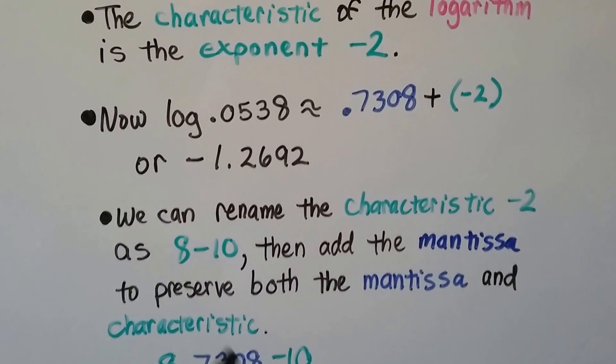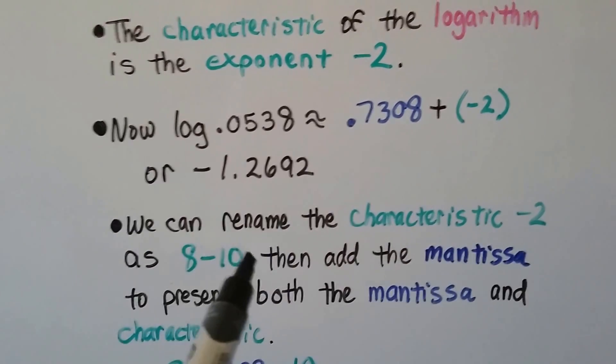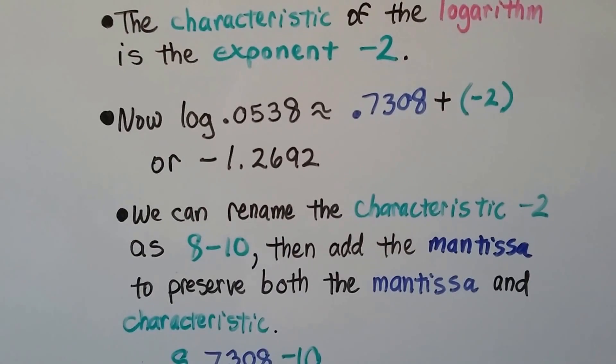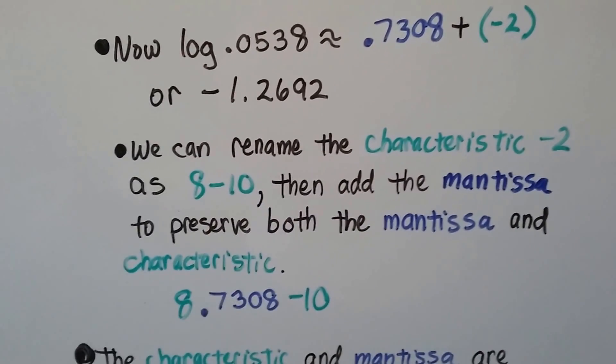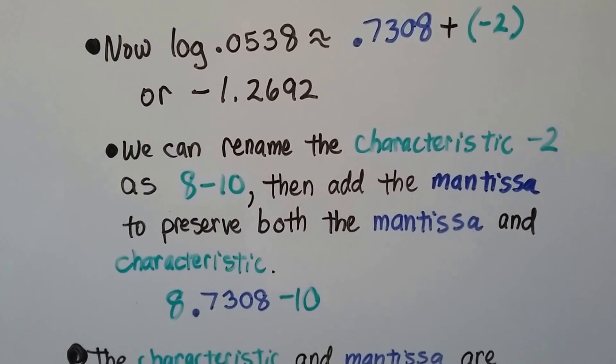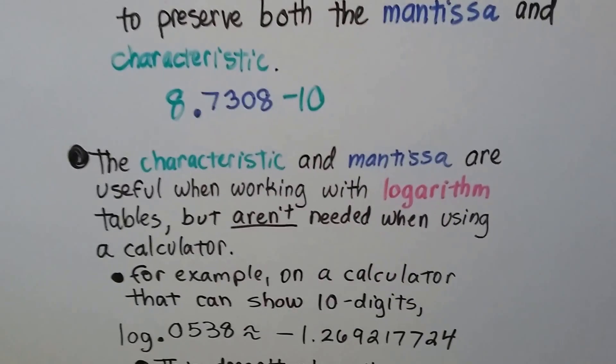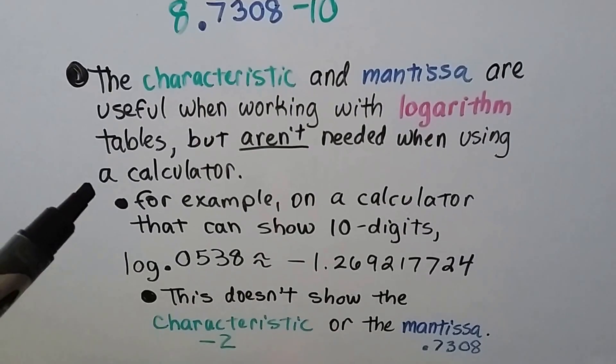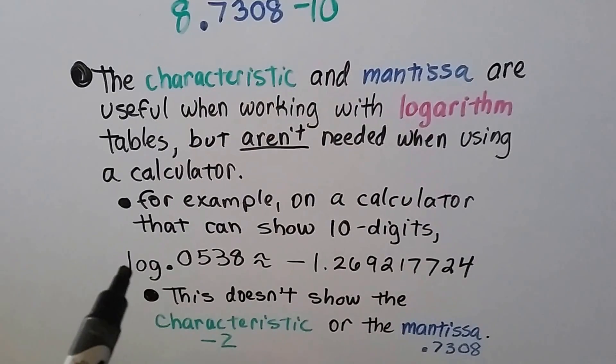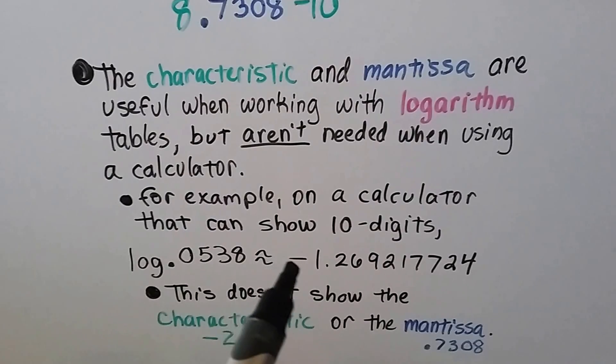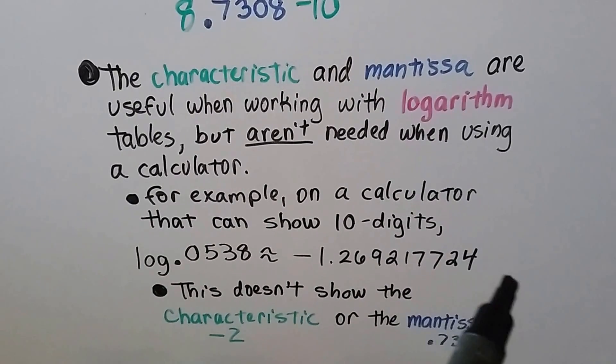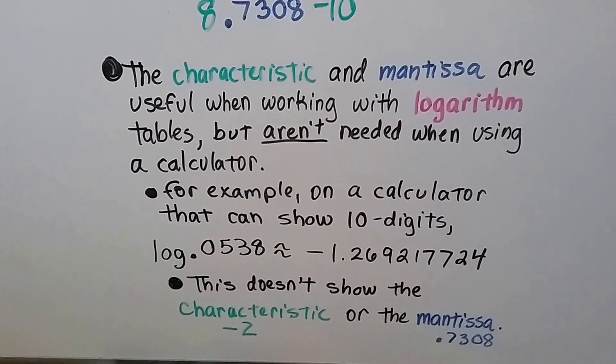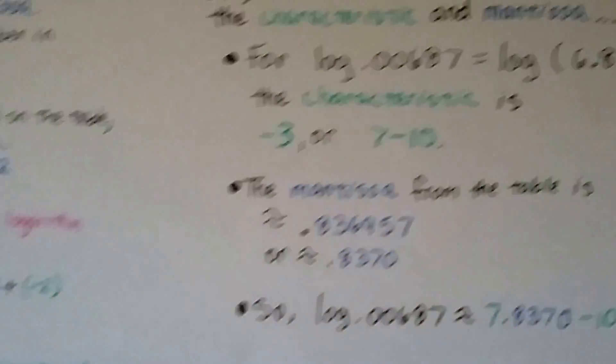We can rename the characteristic negative 2 as an 8 minus 10. 8 minus 10 is the same thing as negative 2. So instead of saying negative 2, we're going to say 8 minus 10. Then we add the mantissa to preserve both the mantissa and the characteristic. So we get 8.7308 minus 10. Now the characteristic and the mantissa are useful when working with logarithm tables, but aren't really needed when using a calculator.